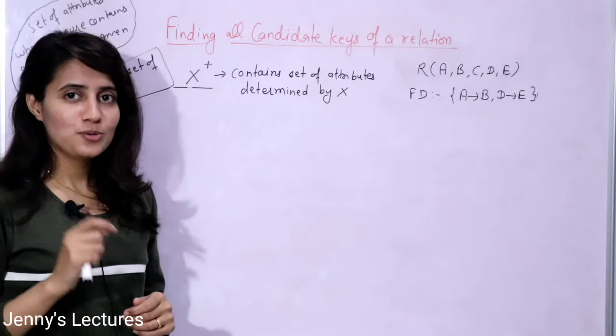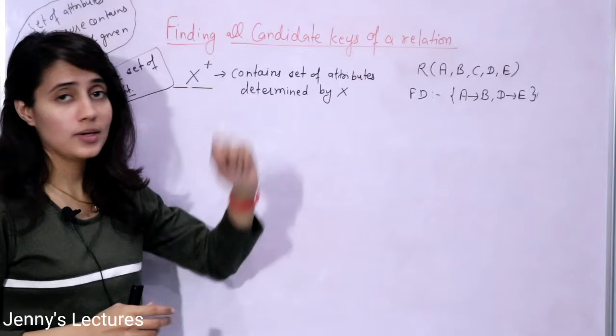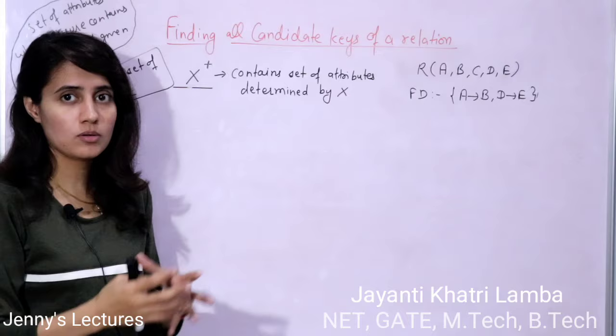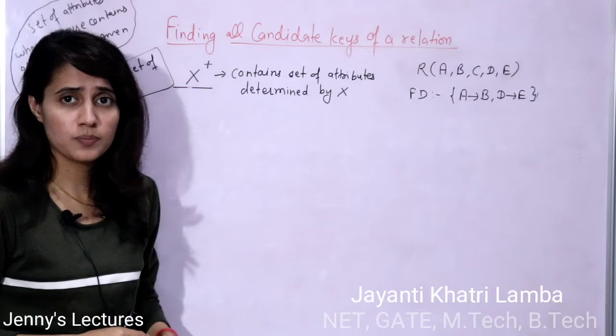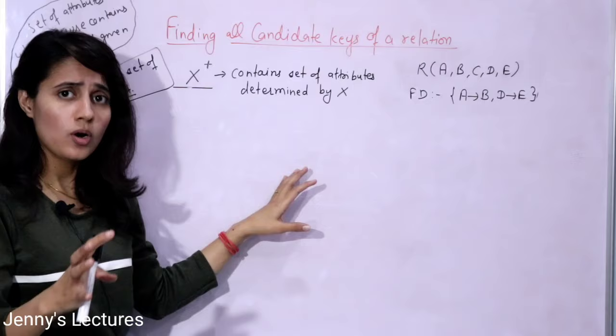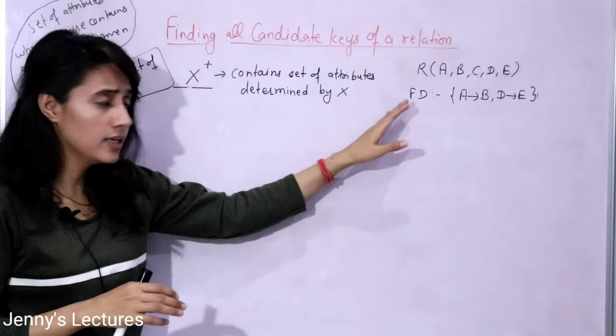In this lecture we are going to see how to find out all the candidate keys from a given relation. This is a frequently asked question in NET or GATE, maybe for two marks or one mark. They'll give you a relation and functional dependencies on that relation, and ask how many candidate keys are present.